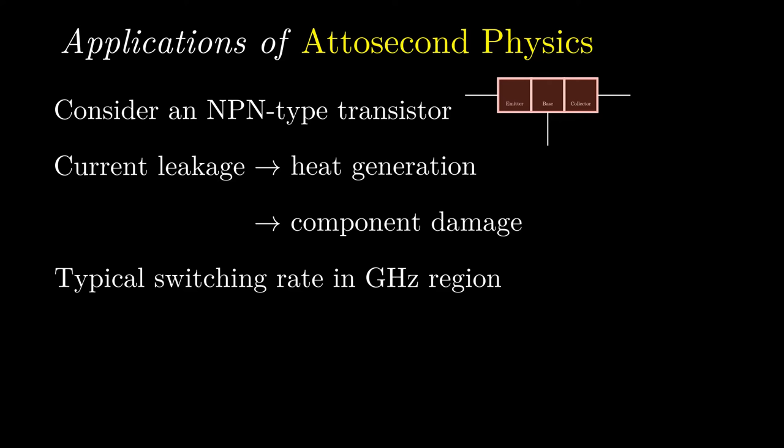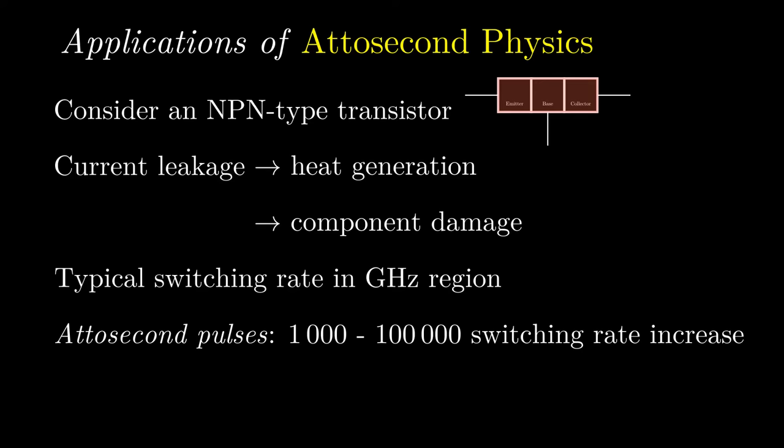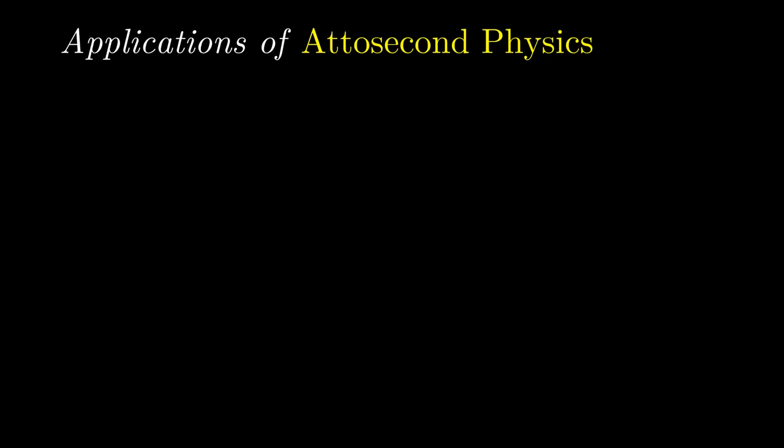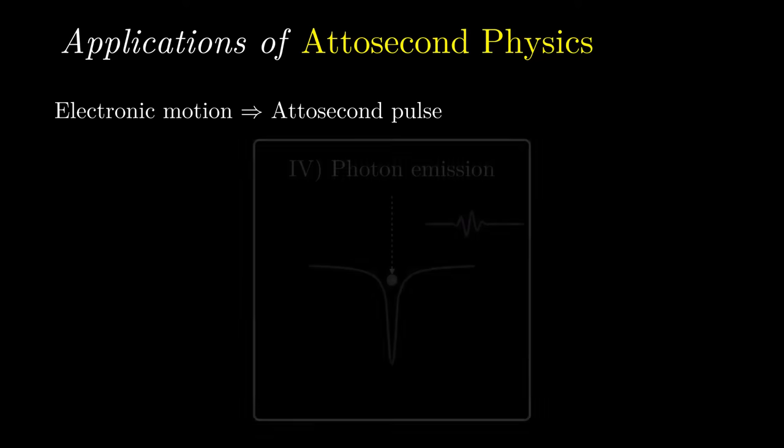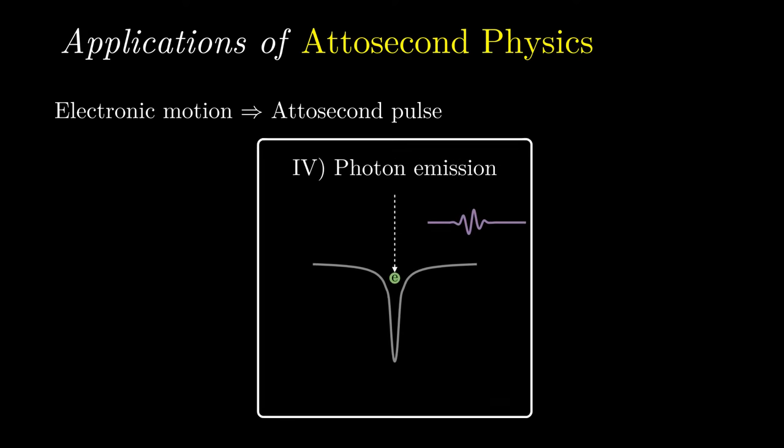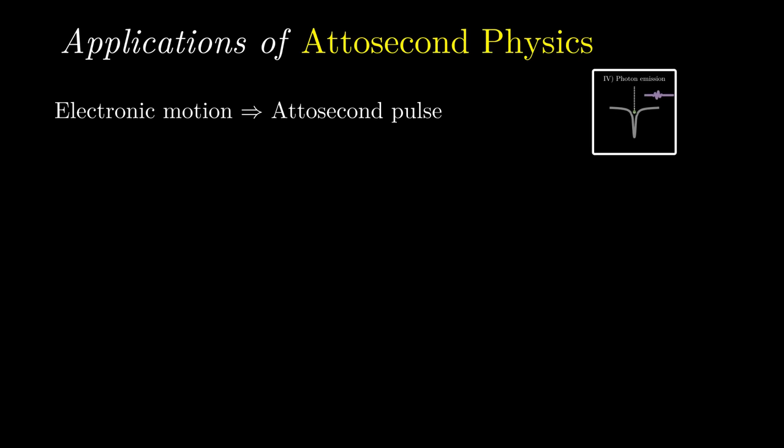This limits the switching speed for a conventional transistor to the gigahertz range, but use of attosecond pulses could allow switching speeds from 1,000 to up to 100,000 times faster than this. Similar to how an electric field was used to accelerate electrons to generate the attosecond pulse, this concept uses the attosecond pulses themselves to drive electrons in a material between two electrodes.